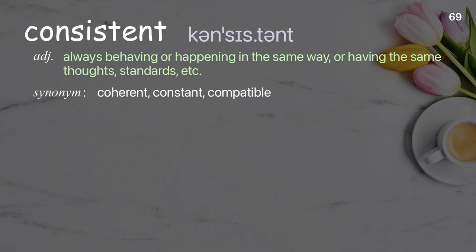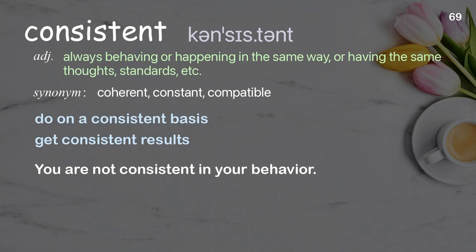Consistent: always behaving or happening in the same way, or having the same thoughts, standards, etc. Examples: do on a consistent basis, get consistent results. You are not consistent in your behavior.